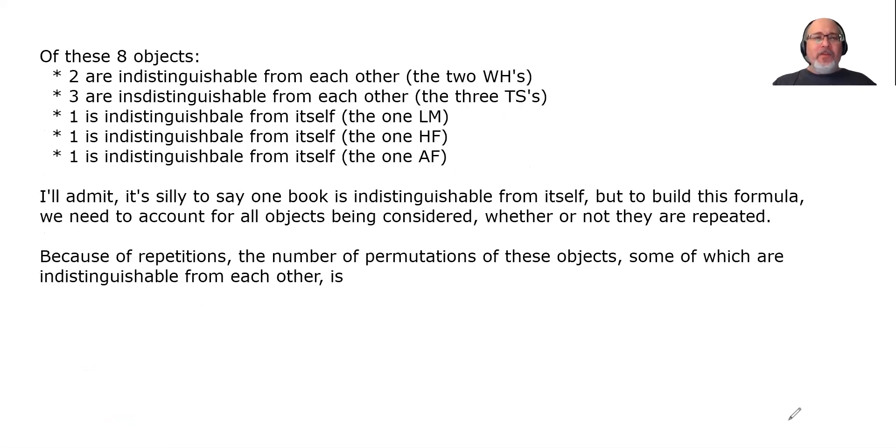Well, let's categorize what we have. Of these 8 objects, two are indistinguishable from each other, the two Wuthering Heights. Three are indistinguishable from each other, the three Tom Sawyers. One is indistinguishable from itself, the one Les Mis. One is indistinguishable from itself, the one Huckleberry Finn. And one is indistinguishable from itself, the one Animal Farm. And I'll admit it's silly to say one book is indistinguishable from itself. But to build this formula, we need to account for all objects being considered, whether or not they are repeated.